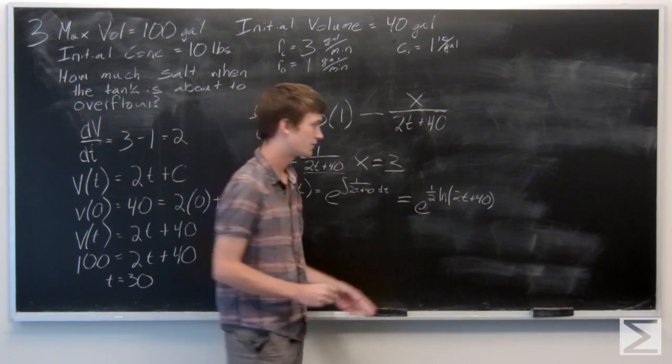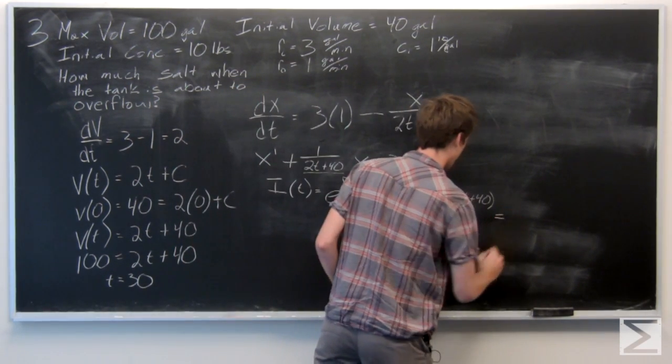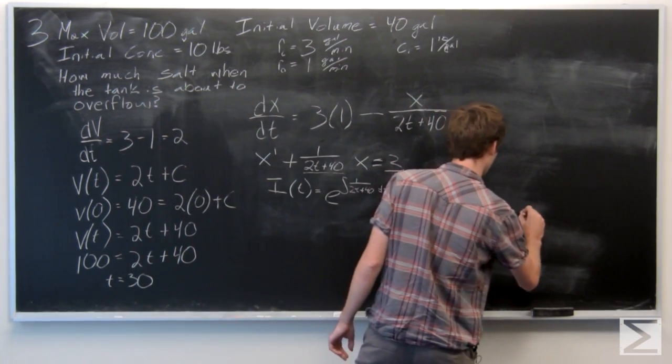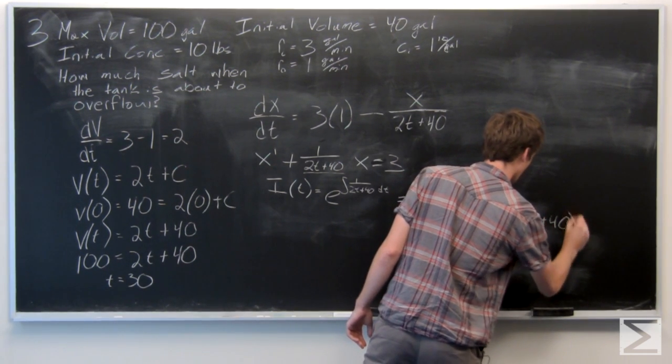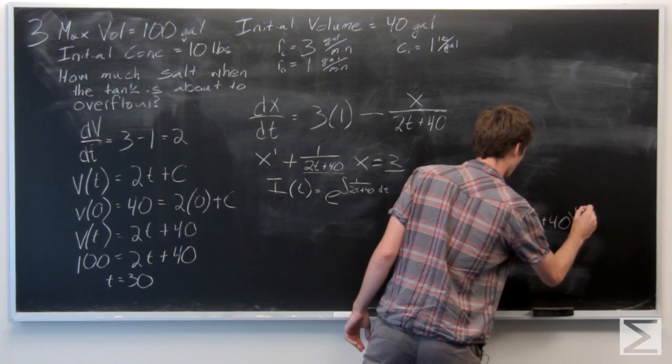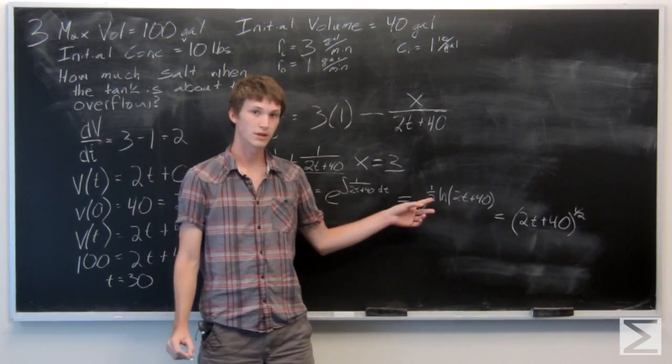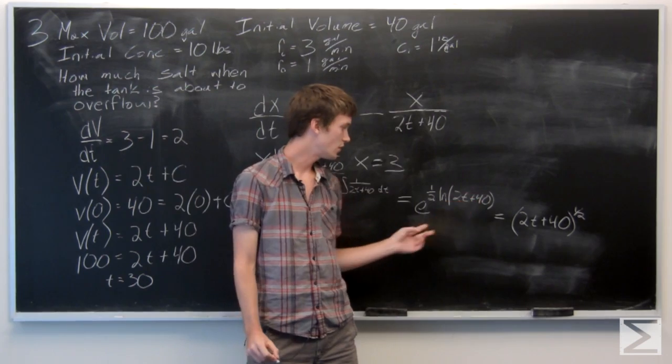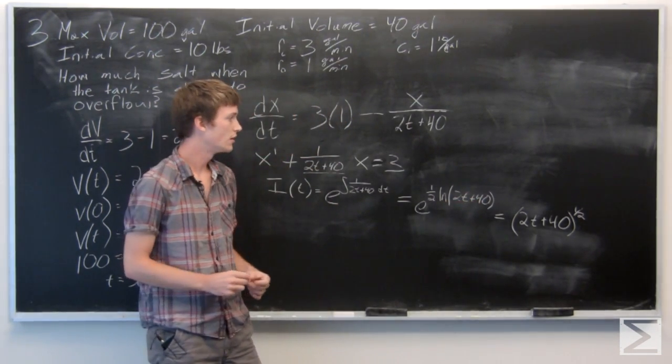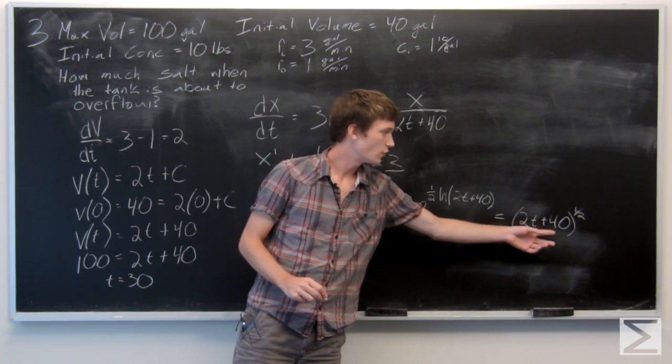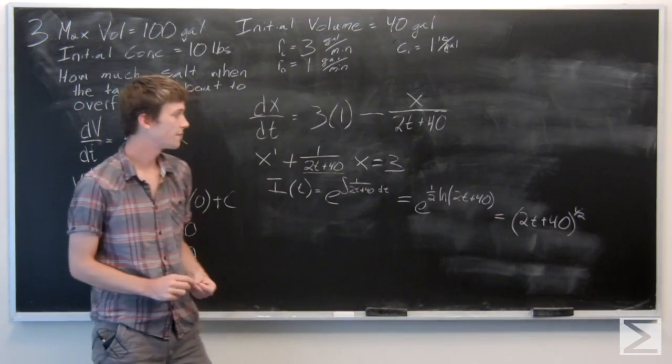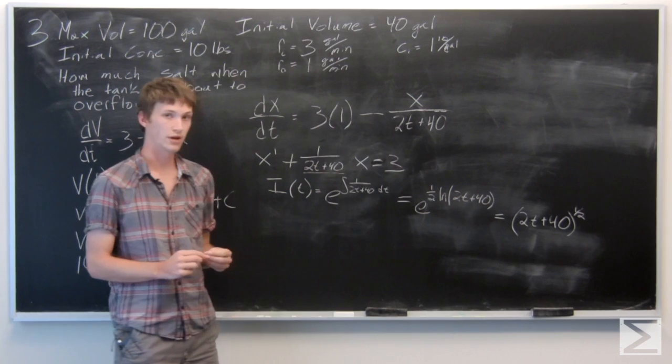And we can simplify this further. Because we can bring this 1 half as a power of the natural log and then e to the natural log cancels. So we get 2t plus 40 raised to the power of 1 half. So that's our integrating factor.